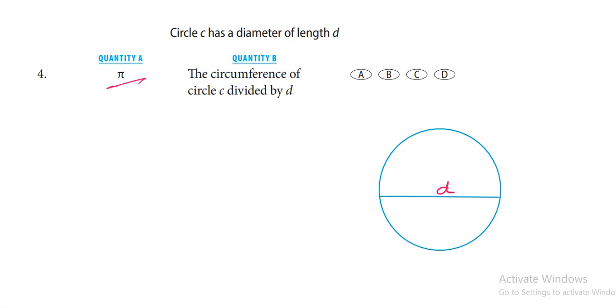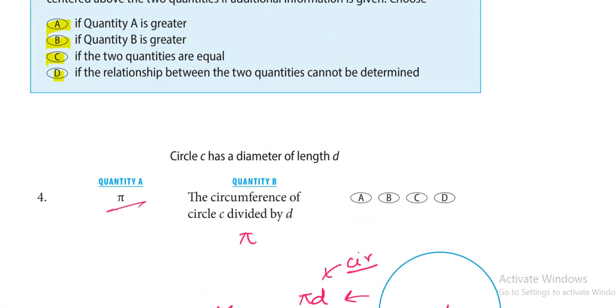The circumference is πd. When πd is divided by d, the d's will cancel out and what will be the result? π. So here also the result is π. Quantity A and quantity B will be the same.